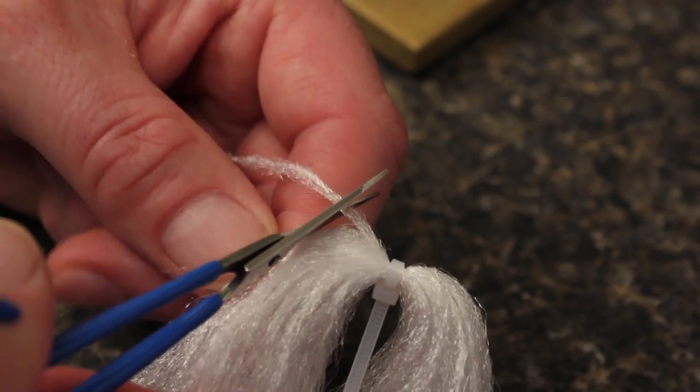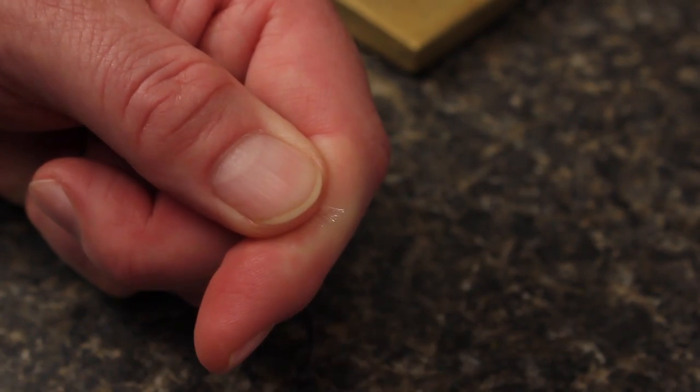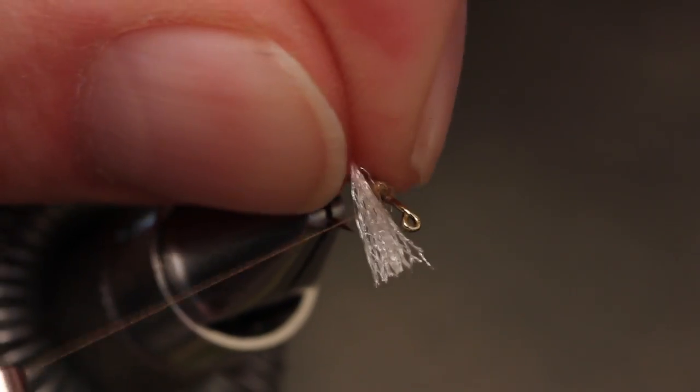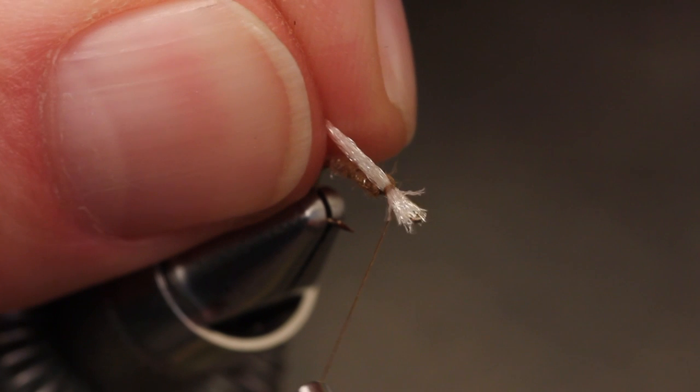For the underwing of the fly, snip a strand of white Zeylon free from the hank. Lay it on the near side of the hook using the thread torque from a couple of wraps to carry it to the top.